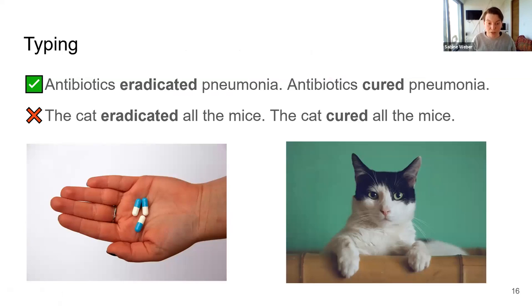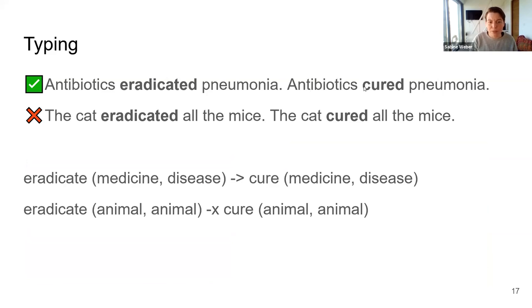Another interesting thing that comes with using the distributional inclusion hypothesis for verbs can be seen in this example. The first two sentences, antibiotics eradicated pneumonia and antibiotics cured pneumonia, can be seen as entailments. When we hear eradicated, we say it means it's cured. But when we look at the second sentence, the cat eradicated all the mice, the entailment does not hold true that the cat cured all the mice. More or less the opposite is the case. And the reason for that is that verbs like this are very dependent in their meaning on the nouns that they occur with. So eradicate in the context of antibiotics and pneumonia means a different thing than when we see it with cat and mouse.